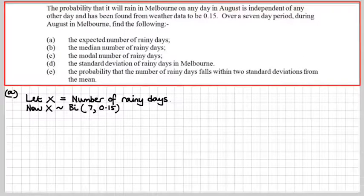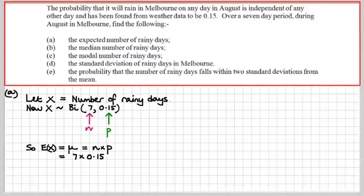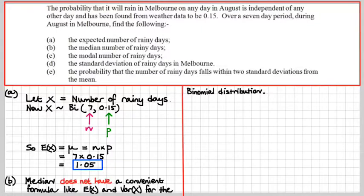So N is 7 for 7 days, 7 trials, and P is the probability that it's going to rain on any one of those days, the probability of success. The expected value of rainy days is μ, and it's equal to N times P for a binomial distribution. That's 7 times 0.15, which gets us 1.05 rainy days. It's okay to have a non-whole number answer here, it's just an average.